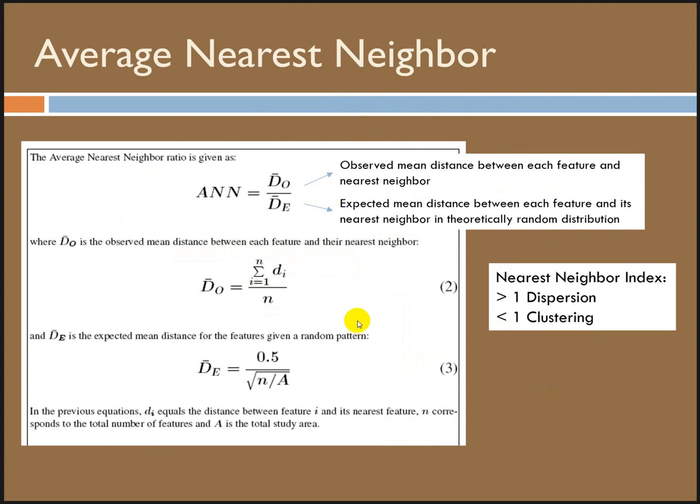Don't freak out about this. This is the equation. It demonstrates that the observed mean distance between each feature of our data set is divided by the expected mean difference of each feature in its nearest neighbor in the theoretical random distribution over the same space. This is how we get the average nearest neighbor index. A nearest neighbor index of less than one indicates clustering, especially if it's accompanied with a very low p-value.